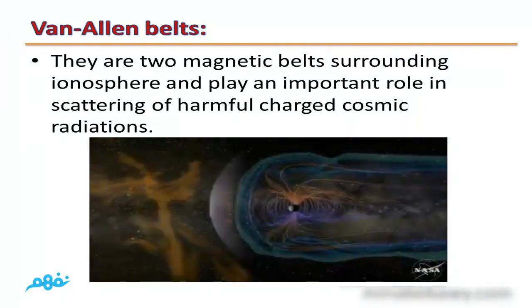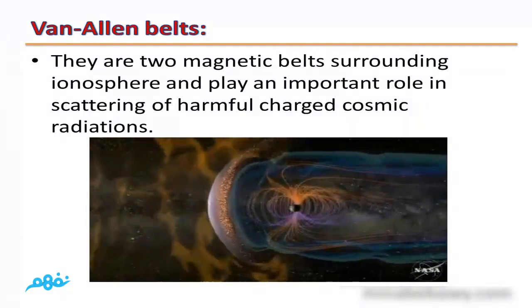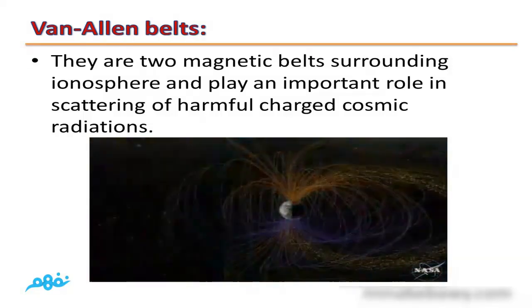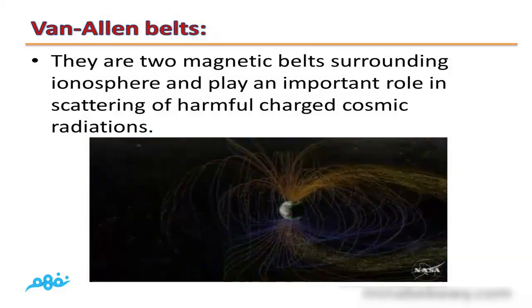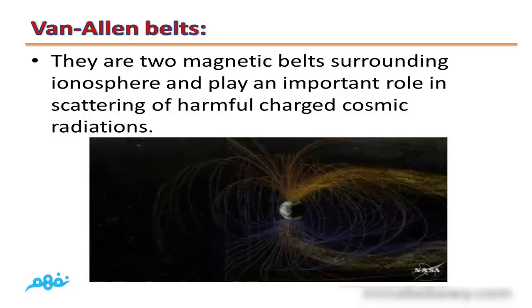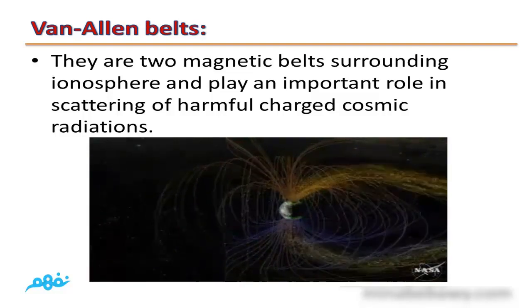Van Allen belts: As you can see from this video, they are two magnetic bulbs surrounding the ionosphere and they play an important role in scattering of harmful charged cosmic radiations.